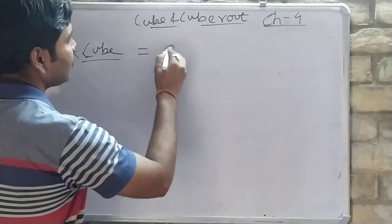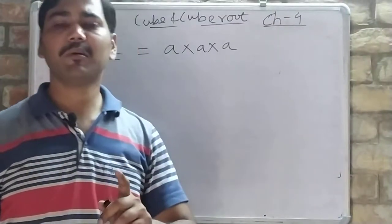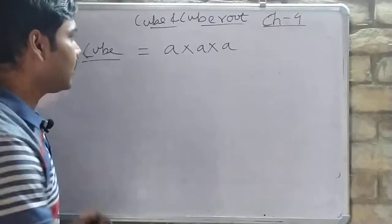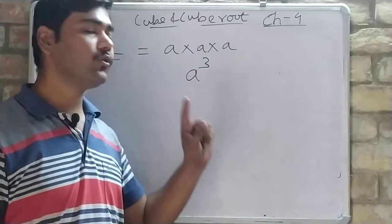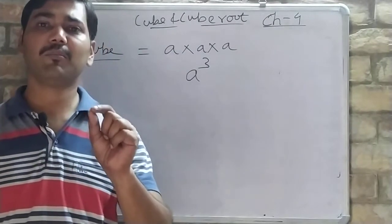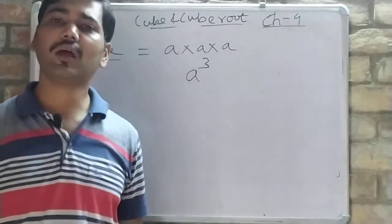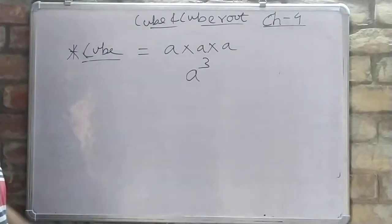So, what is a cube? Cube means any number when multiplied 3 times by itself forms a cube. It is written as A to the power 3, which means A × A × A. When a number is multiplied 2 times it is called square, and when multiplied 3 times it is called cube.